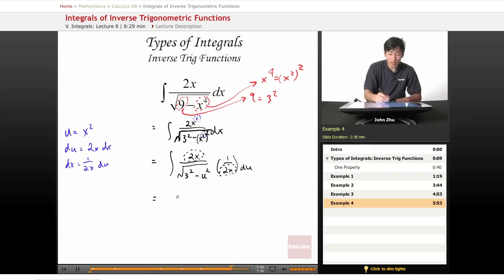We're left with 1 over root of 3 squared minus u squared du, which is just the property for sine. So inverse sine, you get inverse sine of u over 3 plus c, and replace the u, inverse sine of x squared over 3.